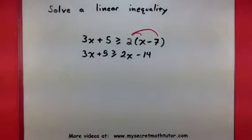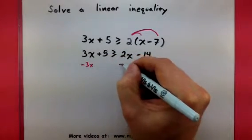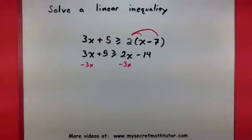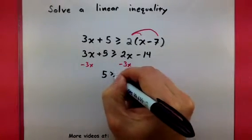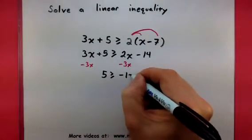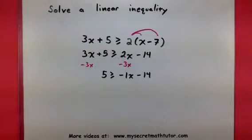Now let's go ahead and get these x's together by subtracting 3x from both sides. So now I have 5 greater than or equal to negative 1x minus 14. And now our x's are together. Great.